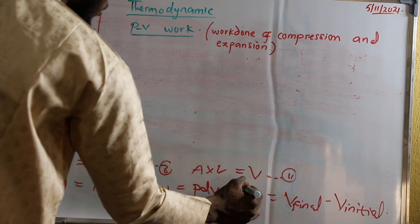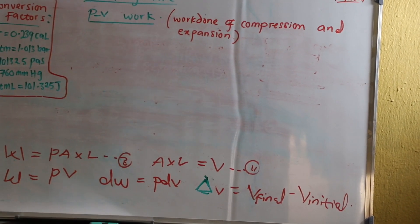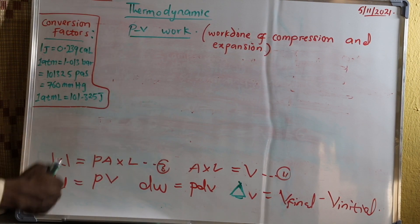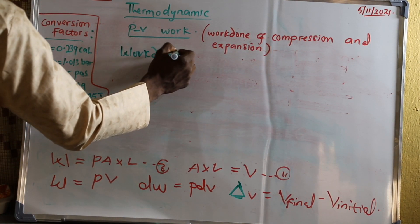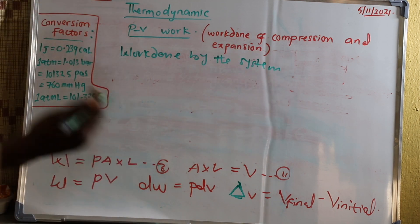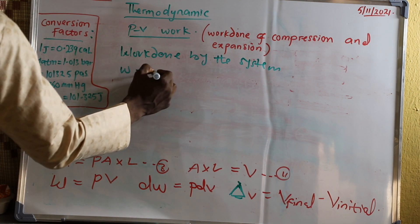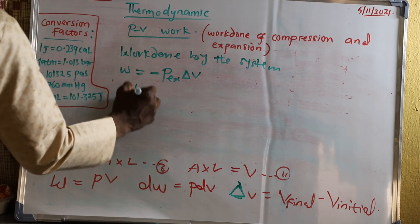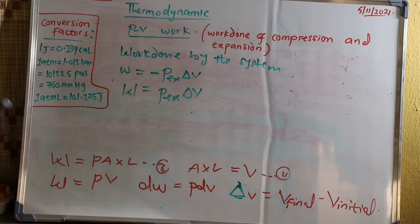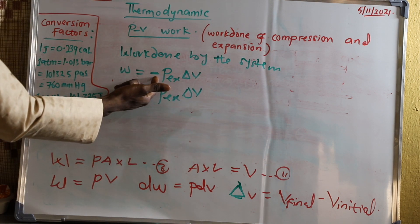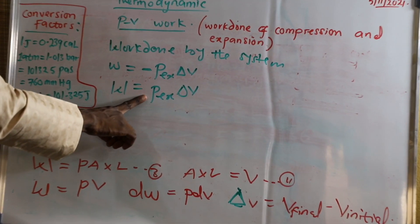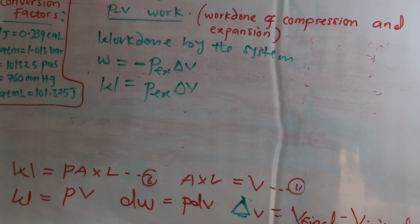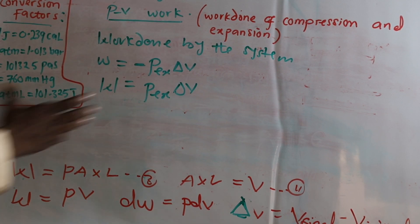For measurable change, ΔV is equal to V final minus V initial. That is what we call work done by the system and work done to the system. When a system performs work, W will be equal to minus P times dV. And when work is done to the system, W will be equal to P times dV. When work is done by the system we assign a negative sign, and when work is done to the system from surrounding, we assign positive P·dV. These are the two formulas we are going to use when calculating problems under PV work.